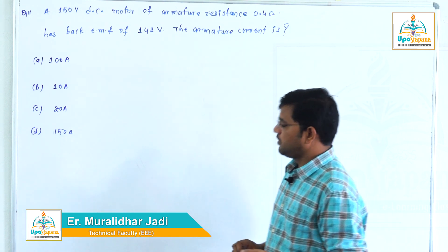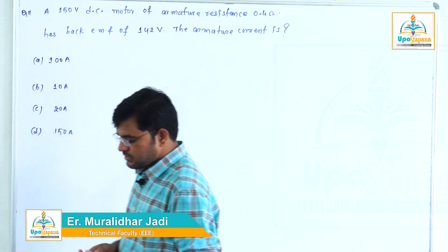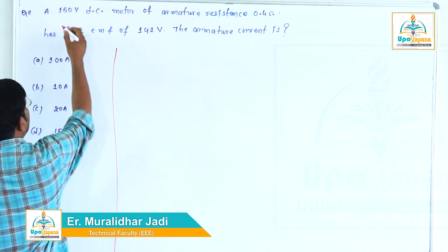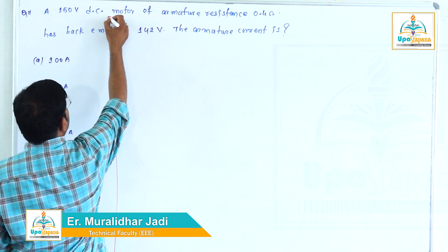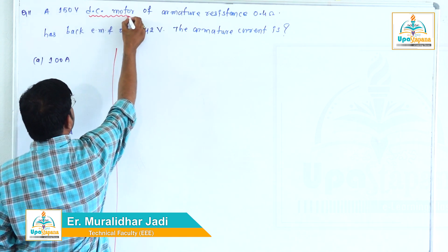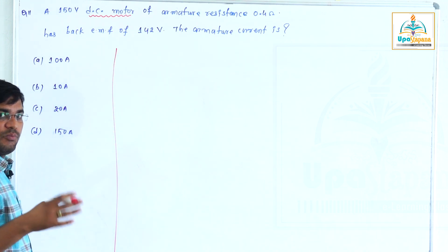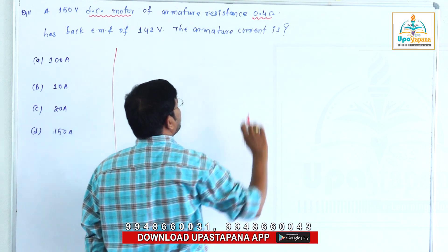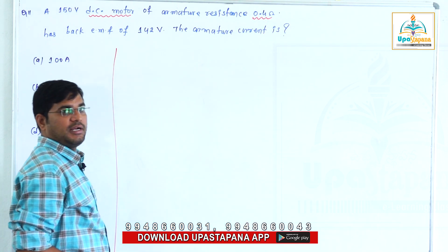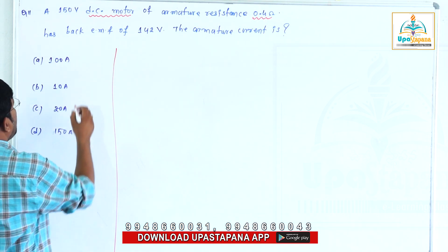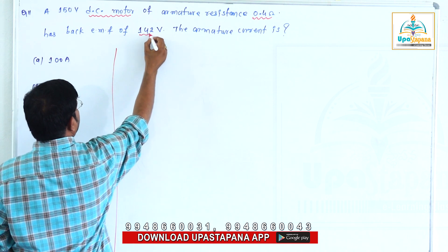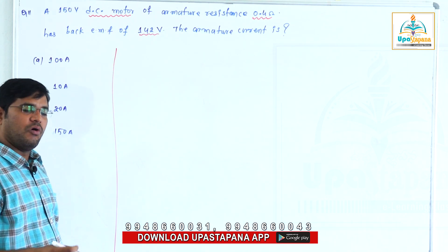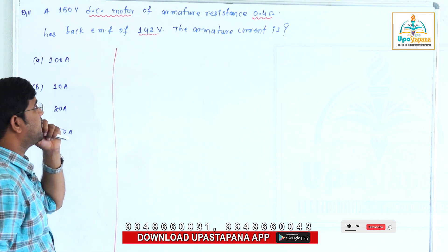This question is a DC motor question. We have a 150 volt DC motor with an armature resistance of 0.4 ohms and a back EMF of 142 volts produced by the motor.